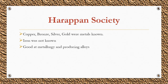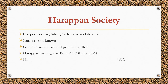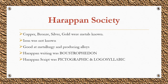They were experts in making use of the potter's wheel and refined the art of bead making. The Harappan writing was boustrophedon — right to left and left to right in alternate lines. The Harappan script was pictographic and logosyllabic, meaning each symbol stood for a word. The Harappan script has not been deciphered yet, and if ever it is, it will throw much light on this culture.